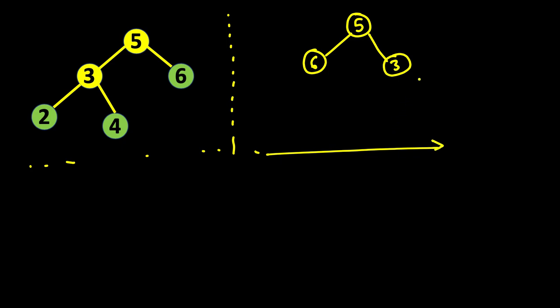Think of it as a mirror placed here. What will happen: we will have 5 here, and 6 is on the right, so 6 will become left, then 3 will become right. On node 3, 2 is left — farther from the mirror means it will be farther on the other side — so 2 comes here and 4 comes here. Whatever is in the left subtree has come into the right subtree, and that is true for all nodes of the tree. If you look at just a subtree, it's inverted as well.